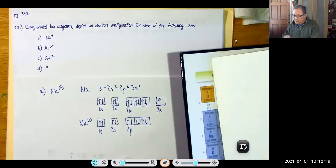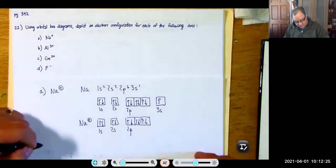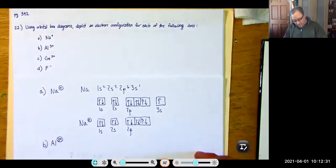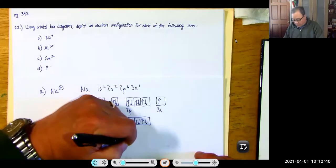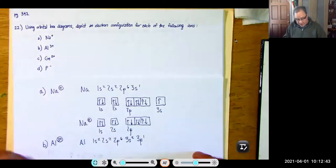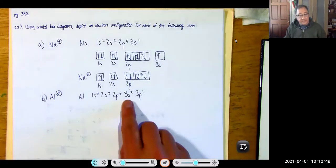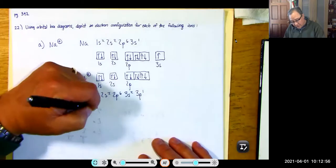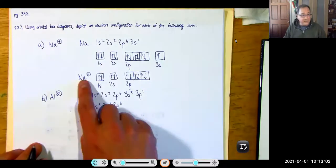For part B, aluminum 3+: aluminum is also in the third period like sodium. Neutral aluminum is 1S2, 2S2, 2P6, 3S2, 3P1. To become a plus 3, we lose three electrons — the least stable ones first. So aluminum 3+ is 1S2, 2S2, 2P6, which means it looks just like the sodium cation.